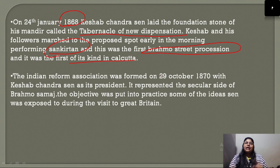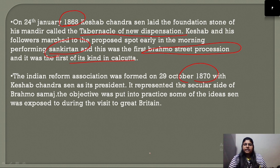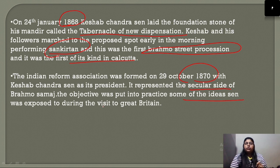In 1870, Keshav Chandra Sen established the Indian Reform Association, which represented the secular side of the Brahmo Society. Its objective was to put into practice some of the ideas Keshav Chandra Sen was exposed to during his visit to Great Britain.